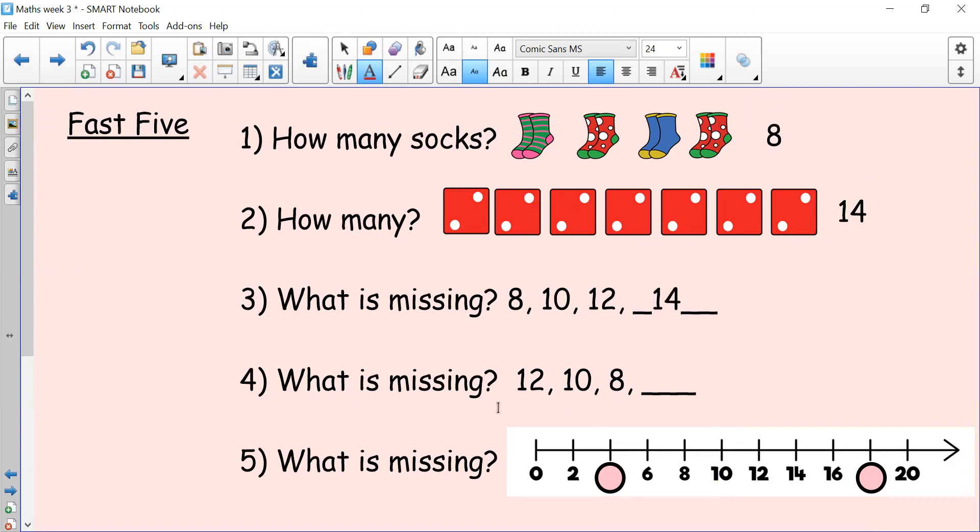And number four, let's look at this sequence: 12, 10, 8. Did you notice the numbers are getting smaller? Good, so we must be counting backwards, that's right. And are we counting backwards in ones? No, we're counting backwards in twos. So, twelve, ten, eight. So two less must be six.